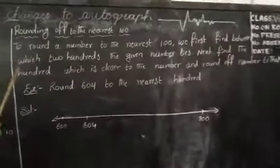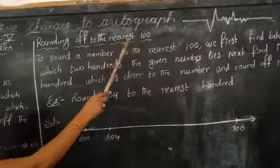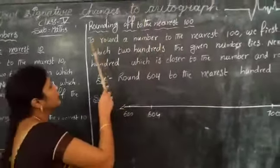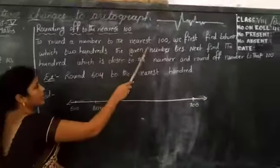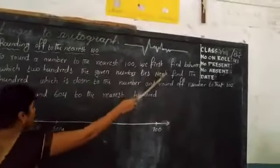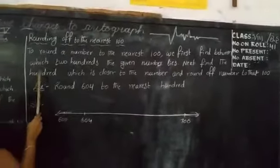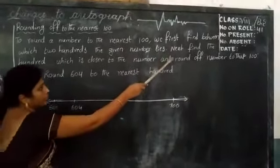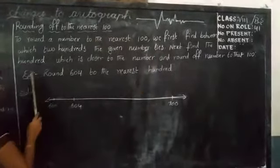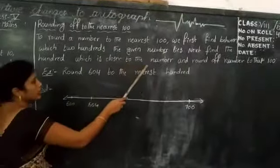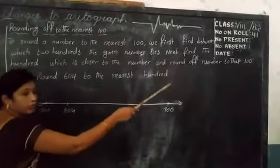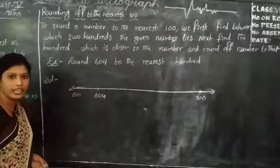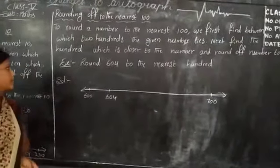Rounding off to the nearest 100. To round a number to the nearest 100, we first find between which 100s the given number lies. Next, find the 100 which is closer to the number and round off the number to that 100.